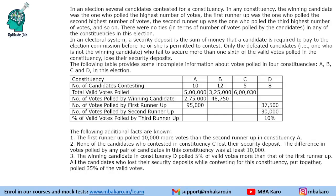Hello everyone, welcome to Aptitude JAB. This set from CAT 2020 slot 2 DILR has a table given to us. It says that in an election, several candidates contested for a constituency. In any constituency, the winning candidate was the one who polled the highest number of votes.